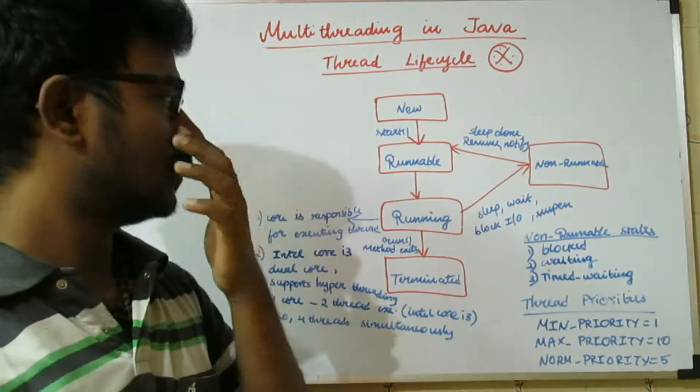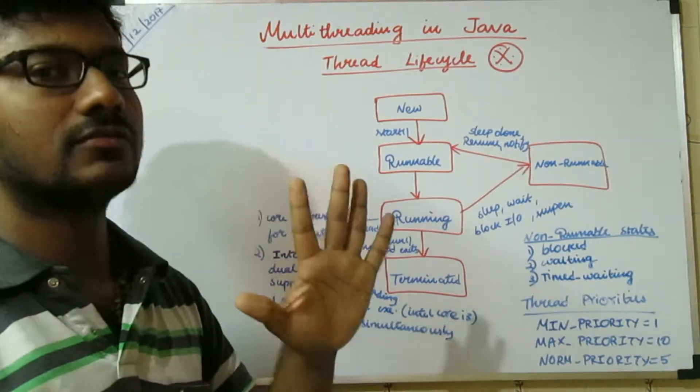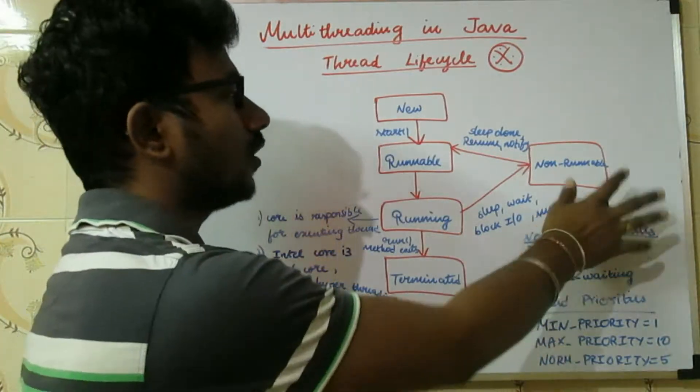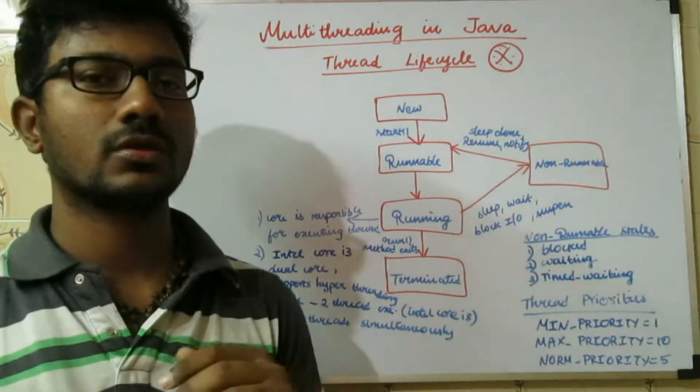So first, there are 5 stages: New, Runnable, Running, Terminated, and Non-Runnable.